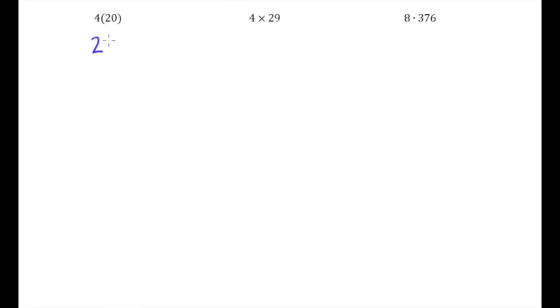Let's begin with the example on the far left: four times twenty. The way you'll write these in general is by stacking them, much like you did with addition and subtraction, always putting the number with a larger number of digits on top. So we're going to put twenty on top and four on the bottom.